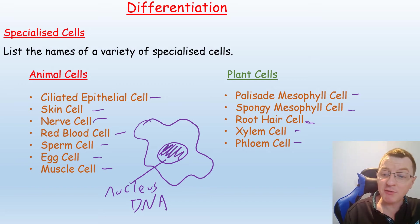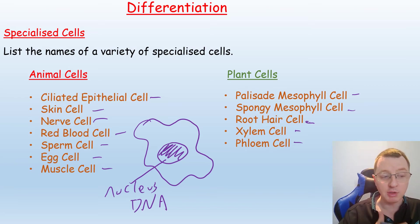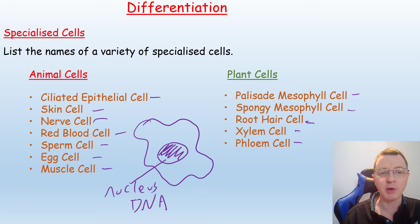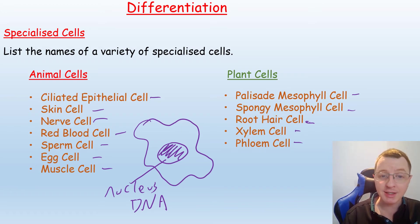DNA is a set of instructions for how to make proteins, and the different proteins made will control the different functions of these cells. But how is it, when every single cell in a multicellular organism has exactly the same DNA and therefore exactly the same genes, that we can have such a variety of specialised cells?